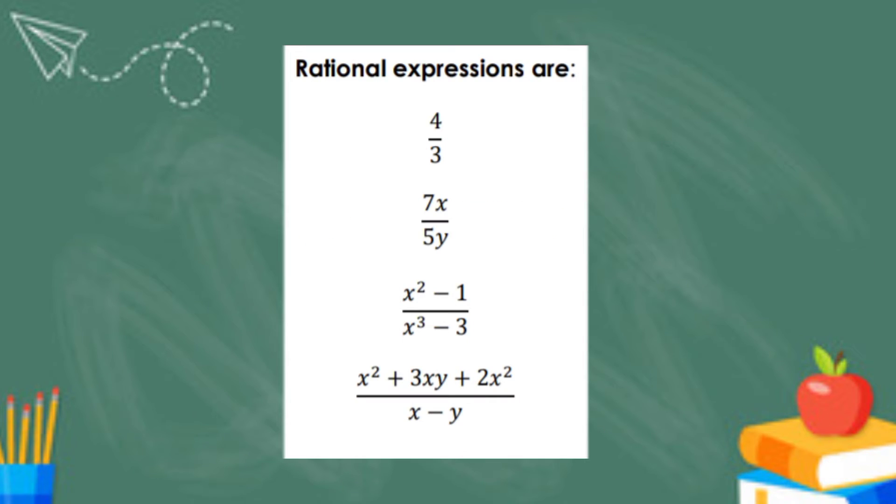These are the examples of rational algebraic expressions. First example, 4 over 3. The P here is 4, and the Q here is 3.